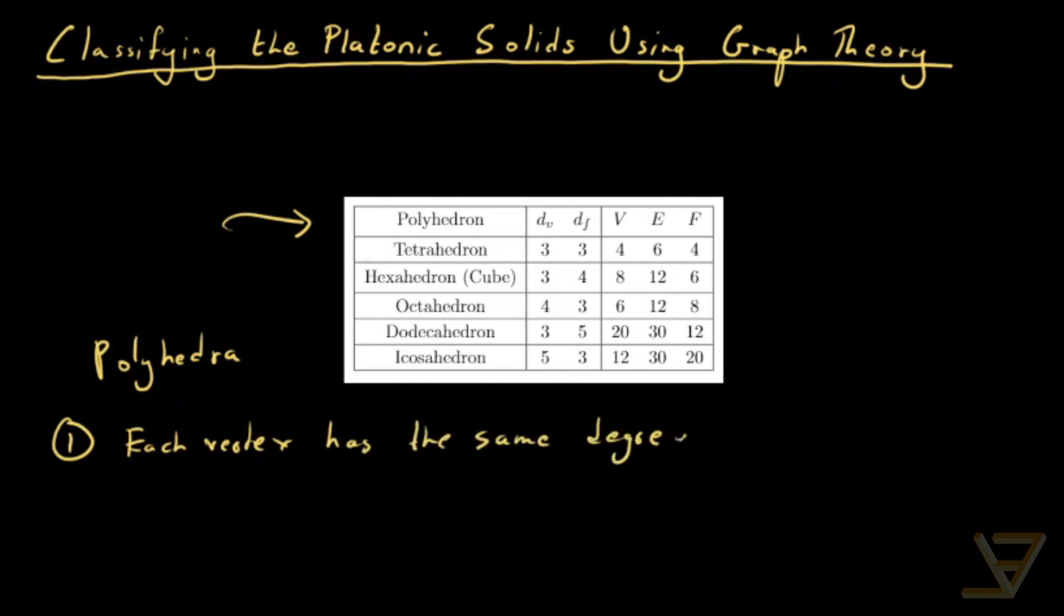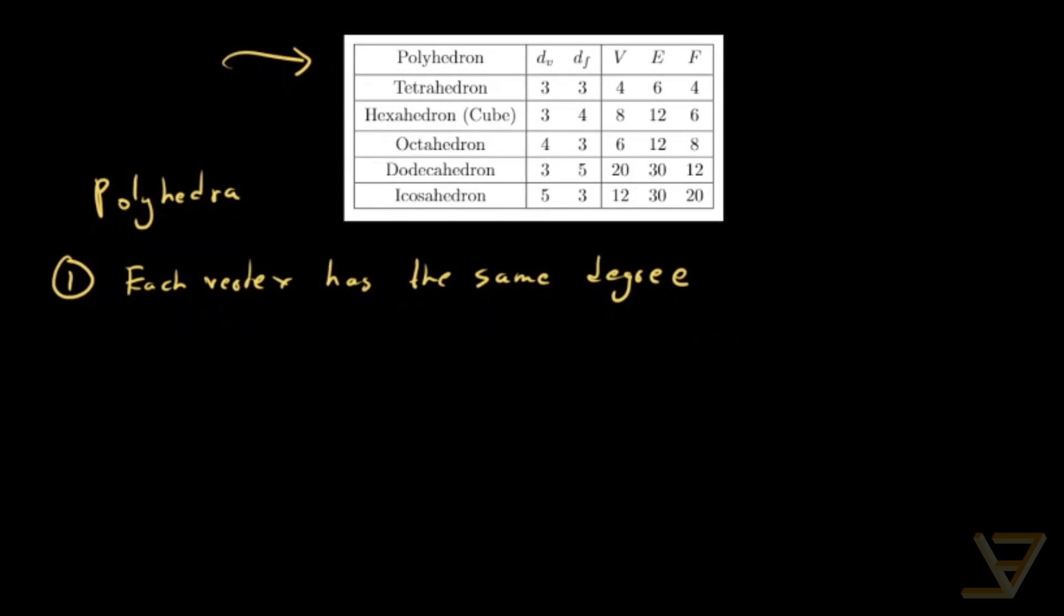What that means is that each vertex has to have the same number of edges coming out of it. And secondly, each face is a regular polygon.